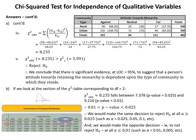In part b, looking at the chi-squared table for DF = 2, chi-squared obtained = 8.235 falls between 7.378 (p-value = 0.025) and 9.210 (p-value = 0.01). Therefore the p-value is between 0.01 and 0.025. We reject H₀ for all common alpha ≥ 0.025, such as alpha = 0.025, 0.05, 0.10, etc. We do not reject H₀ for all common alpha ≤ 0.01, such as alpha = 0.01, 0.005, etc.